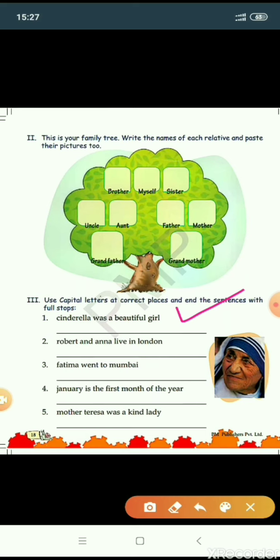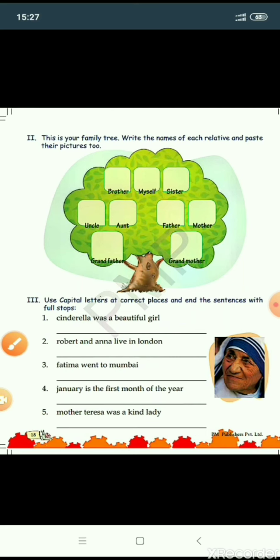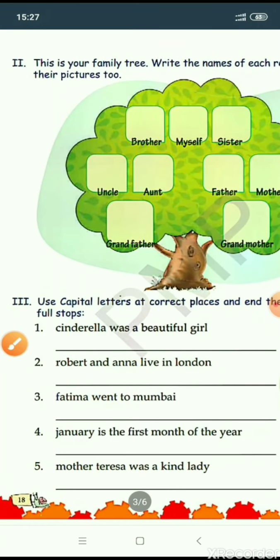Next: Robert and Anna live in London. Robert and Anna are both proper nouns — names of particular persons — so we write capital R for Robert and capital A for Anna. London is the name of a particular city, so L of London will be capital. Robert and Anna live in London. Full stop.